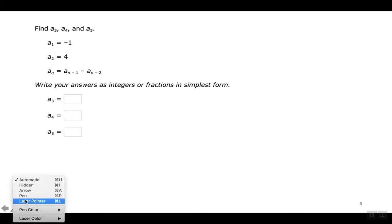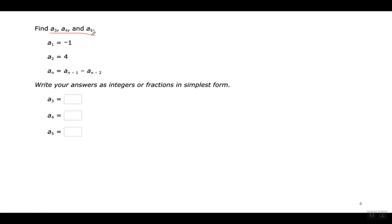Again, find A3, A4, and A5. They gave me the first term and the second term. I'm going to find the third term by substituting the number 3. To find the third term, I put a 3 here and a 3 here — it's going to be the second term minus the first term. Now I got to subtract.